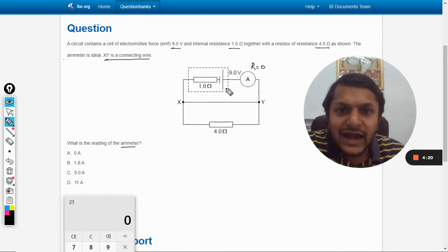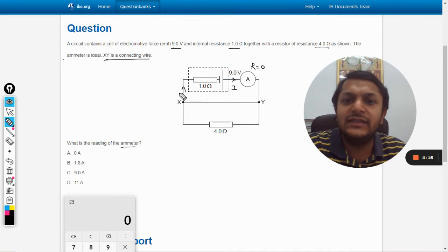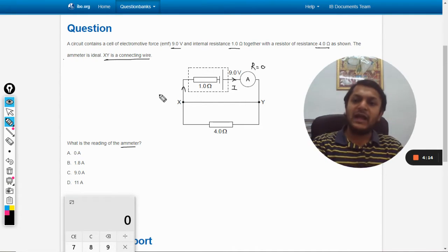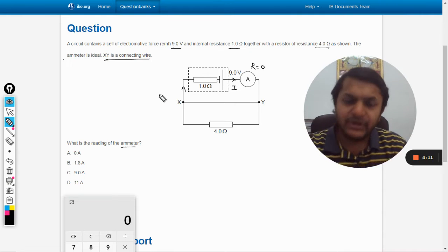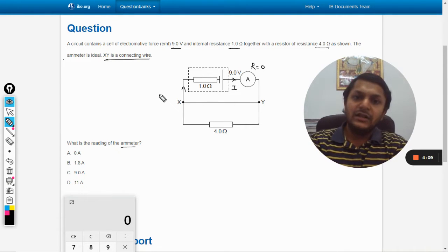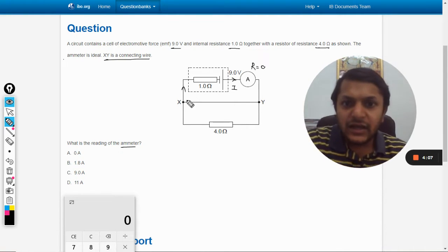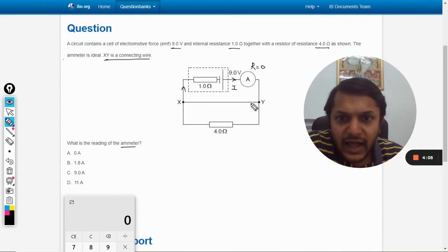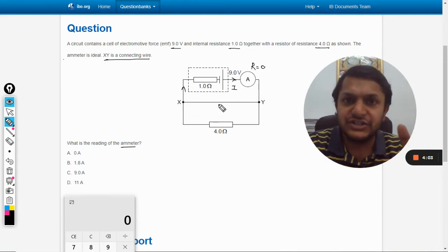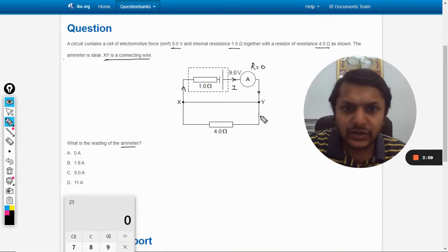The current is coming out of the battery and flowing in this circuit. We need to find the reading of the ammeter. In this case we can see that there are two junctions here, X and Y. So the current I that is coming to the junction Y from the positive terminal of the battery is getting divided into two.